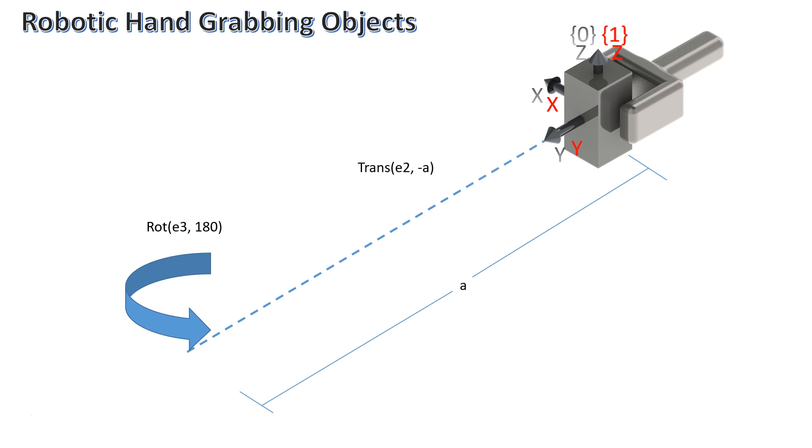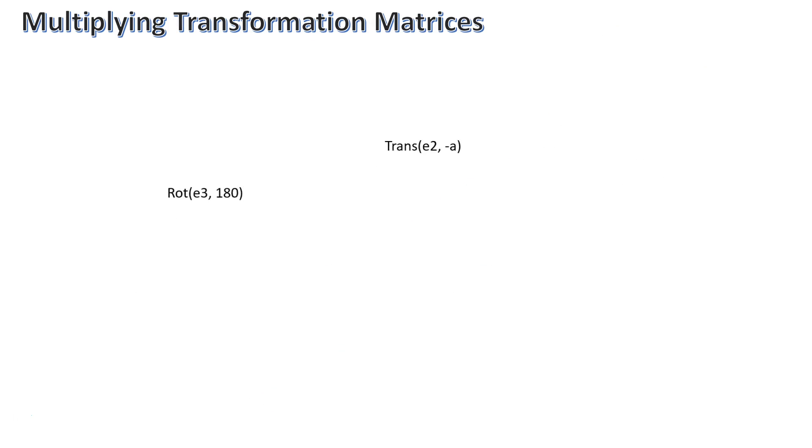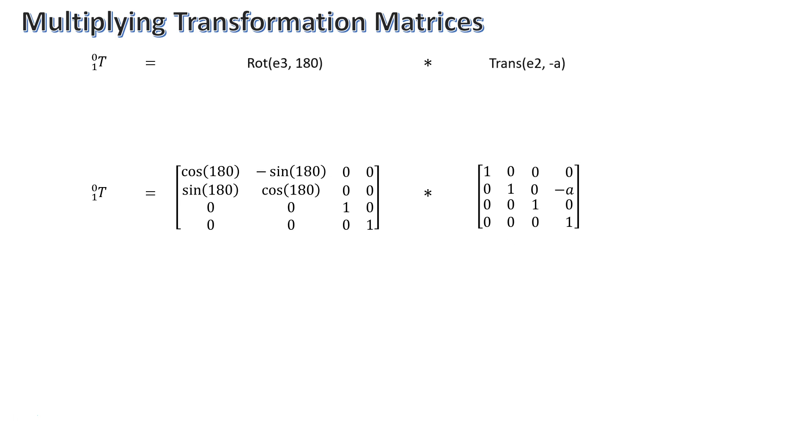To find your transformation matrix between these two frames, simply multiply the matrices together. We know that these rotation trans functions will result in these two matrices, and from here the multiplication will provide the final transformation matrix.